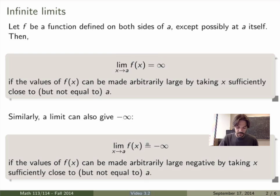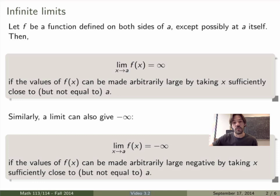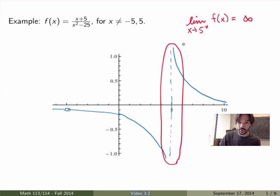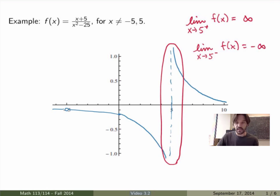I can also define the same thing on the negative side. If I write minus infinity, it means the values of the function become very very large but negative when x becomes close to a. Going back to our example, on the right-hand side we have that the limit as x goes to 5⁺ of the function is plus infinity, because the values become very very large and positive, while on the left-hand side it becomes minus infinity.